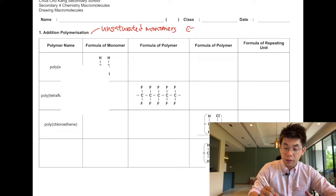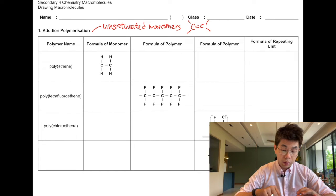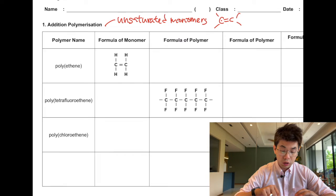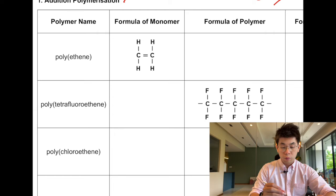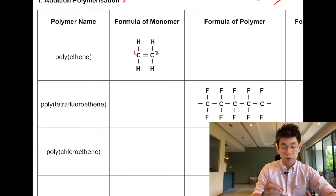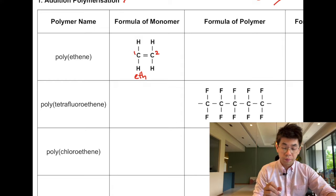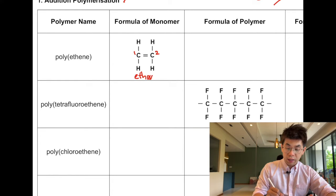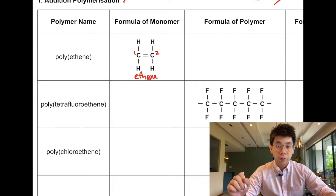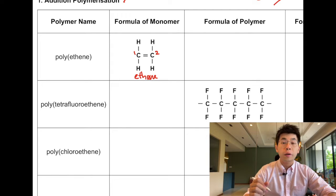One good practice is to draw the monomer in such a manner. This monomer has one, two carbons, and it has a double bond so it's ethene.